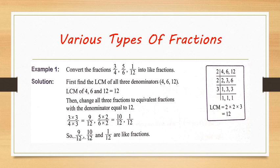Example: convert the fractions 3 by 4, 5 by 6, and 1 by 12 into like fractions. First, find the LCM of denominators 4, 6, and 12, which is 12. Then change all three fractions to equivalent fractions with denominator 12 by multiplying appropriate common factors. So 3 by 4 becomes 9 by 12, and 5 by 6 becomes 10 by 12. Now all fractions have the same denominator, making them like fractions.